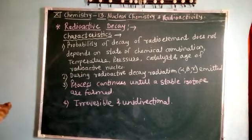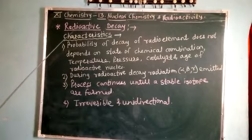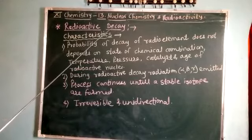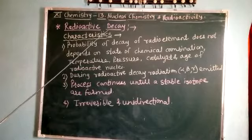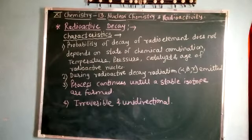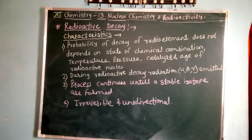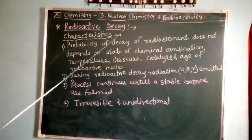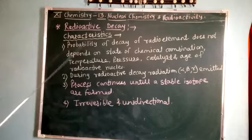An unstable nucleus becomes stable by a process called radioactive decay. In this process, the unstable nucleus decomposes spontaneously into a more stable configuration by emitting some radiations, and that process is called radioactive decay.